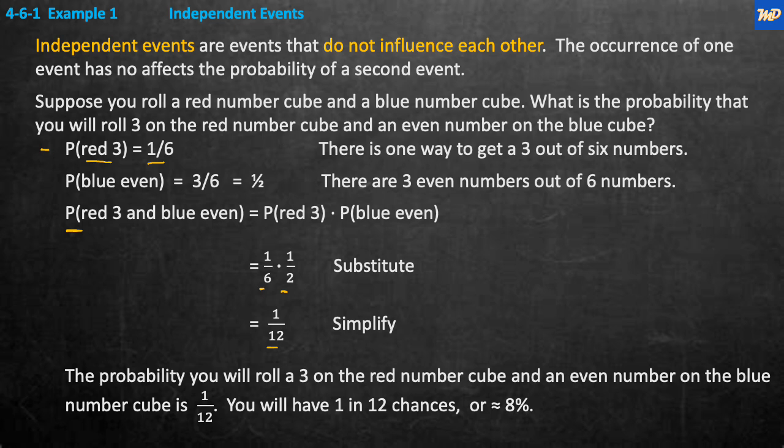The probability of rolling a red three and a blue even number equals P(red three) times P(blue even) = one-sixth times one-half = one-twelfth. That means if you rolled both cubes twelve times, theoretically one of those times you'd get a three on the red cube and an even number on the blue cube.